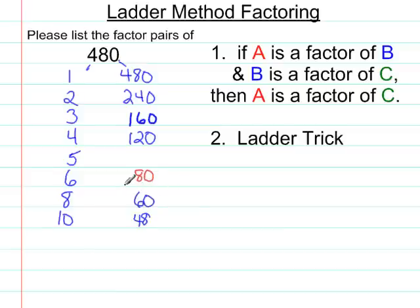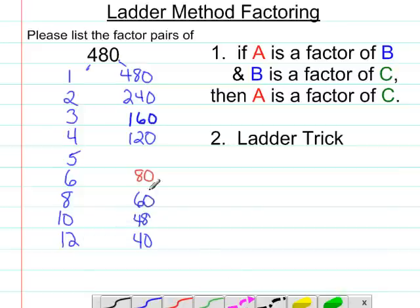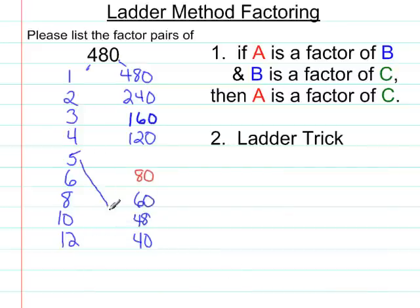So how can we continue to go here? Then we've got 11, no. 12 goes into 480 because it goes into 48. It goes into 48 4 times, and 4 times 10 is going to be 40. Now I can go back to the 5 and see that 5 goes into 40 8 times. And 8 times 12 is going to be 96.